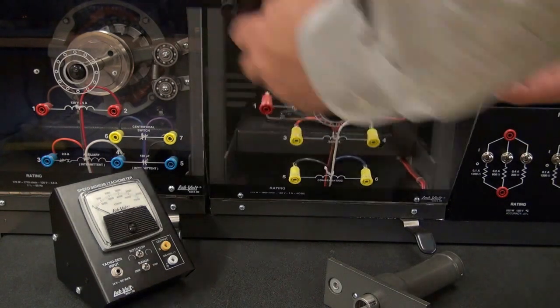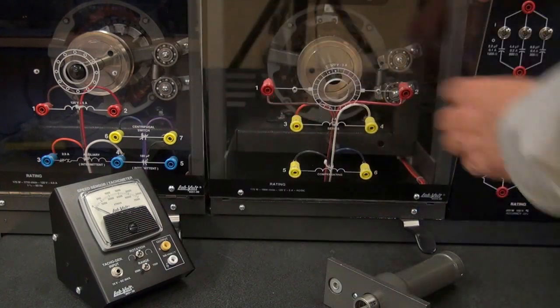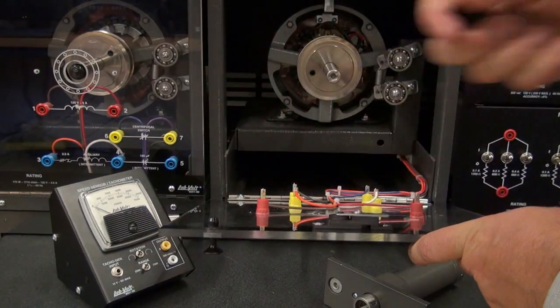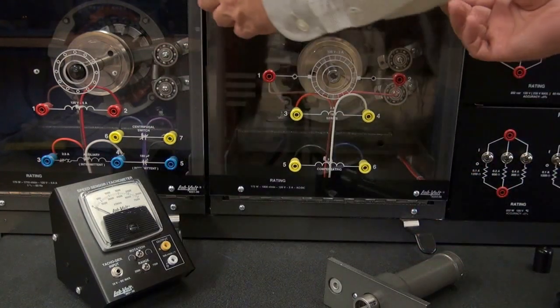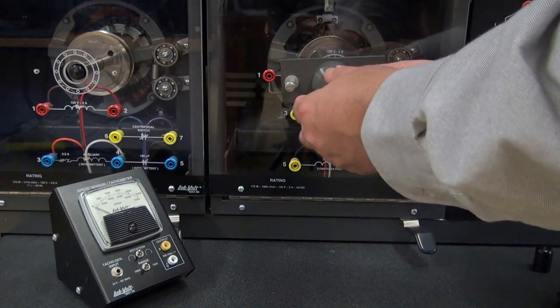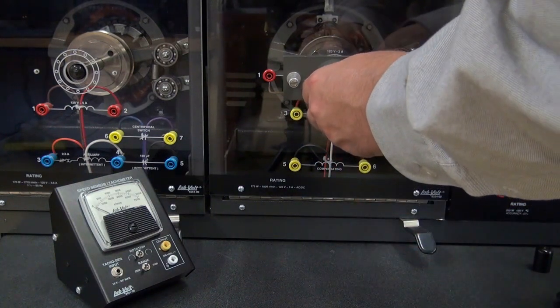To connect the speed sensor, you must first remove the plug from the front panel, remove the rubber cap from the shaft of the machine if it is there, then mount the sensor to the module using the threaded holes in the front panel.